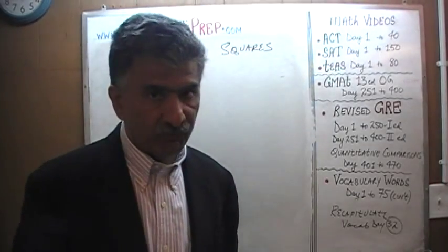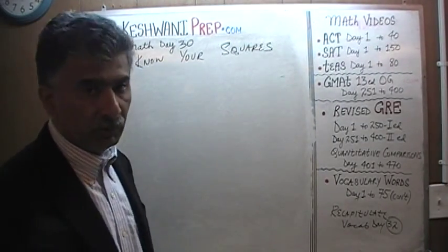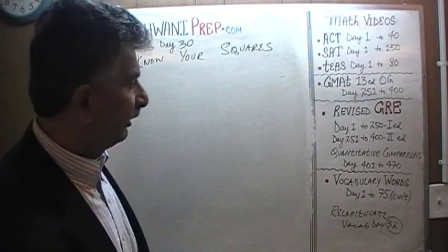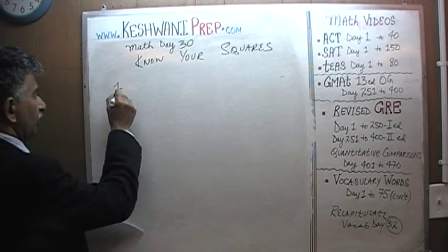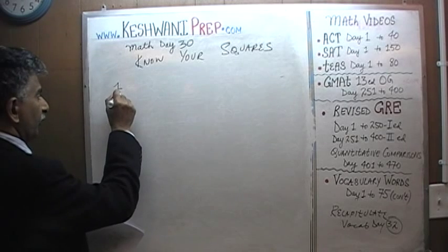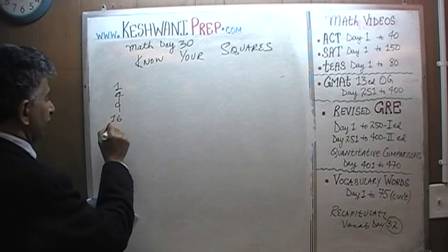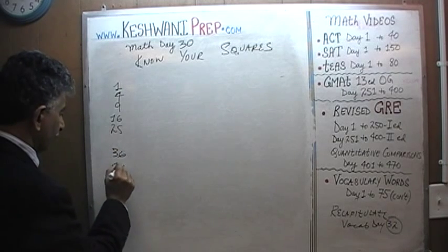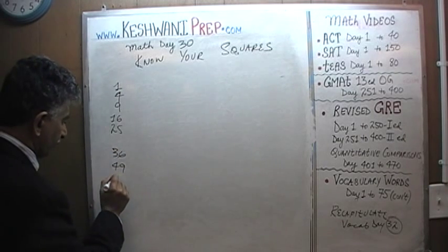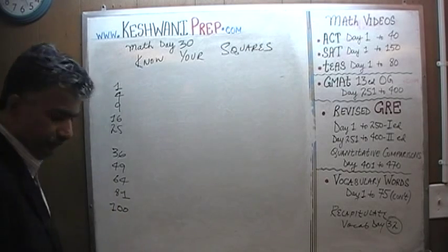1 through 10 is very straightforward, so we are not going to make a fuss about them. I hope you know your squares 1 through 10. 1 squared is 1, 2 squared is 4, then 9, 16, 25, 36, 49, 64, 81, and 100.